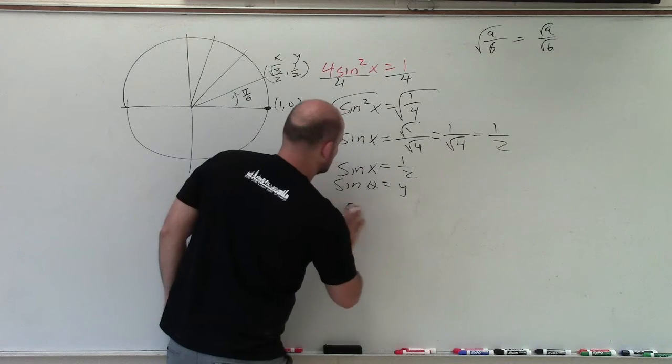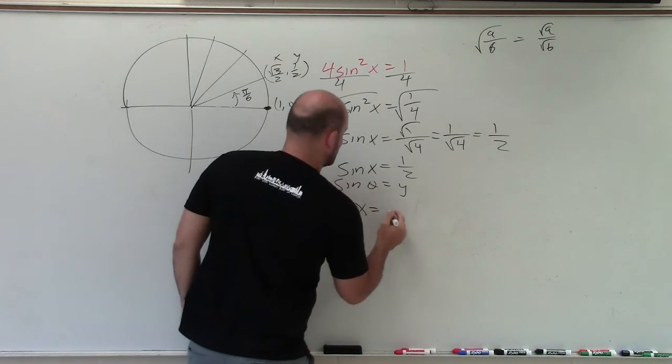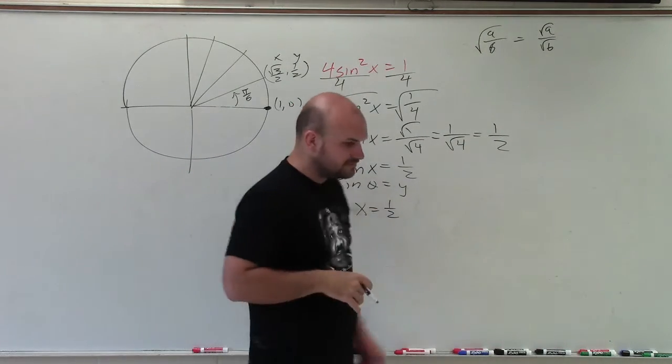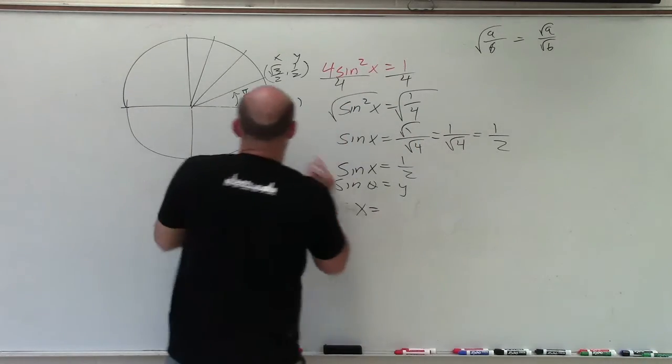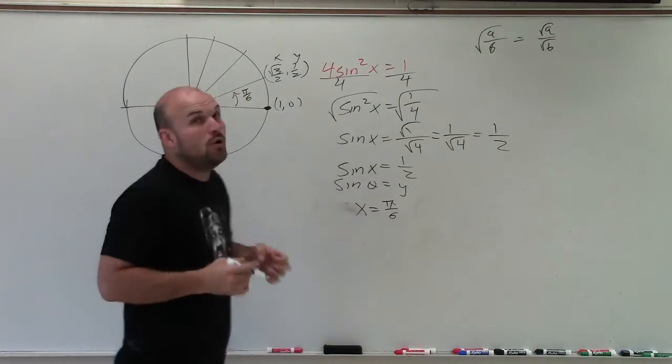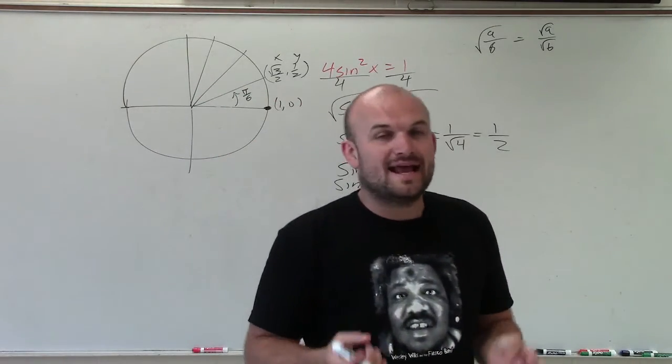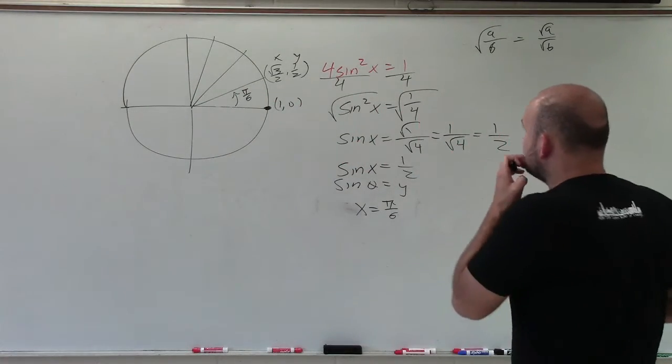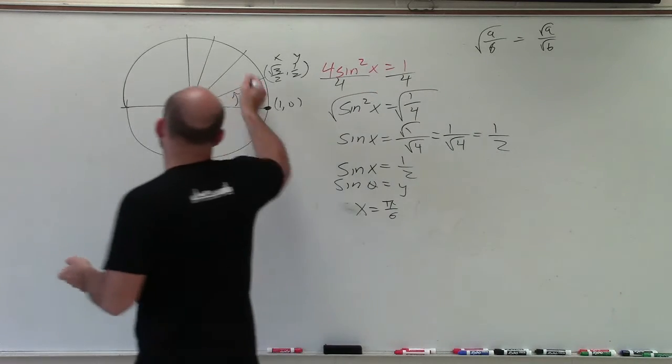So therefore, I can say x is equal to 1 half. I'm sorry. The angle, x is equal to the angle pi over 6. But that's not the only angle that x is going to equal to 1 half in this first quadrant.